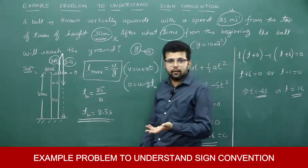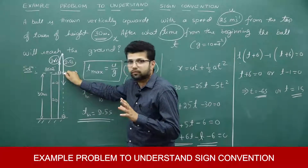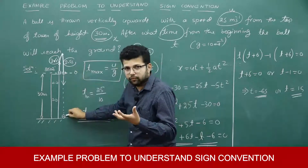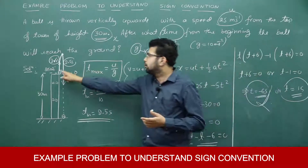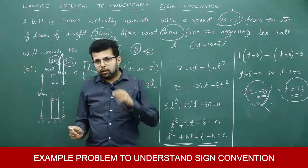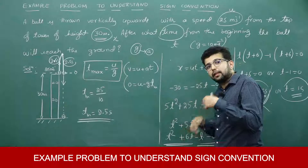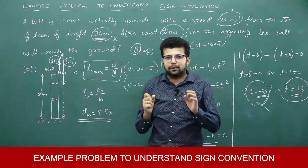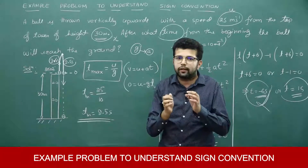We already calculated 2.5 + 2.5 = 5 seconds for the ball to go up and return to the tower top. The additional time for the ball to fall from the tower top to the ground is 1 second (since negative time is not possible). So the total time = 5 + 1 = 6 seconds. In the second method we used two or three formulas, but in the first method, by focusing only on net displacement and trusting the sign convention with a single formula, we get the correct answer directly.